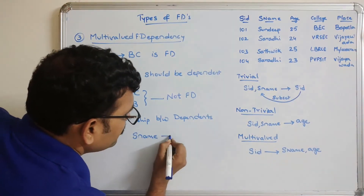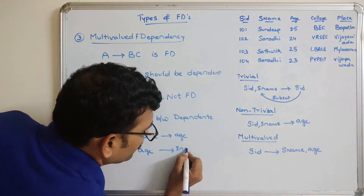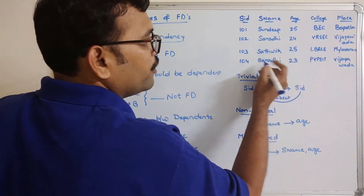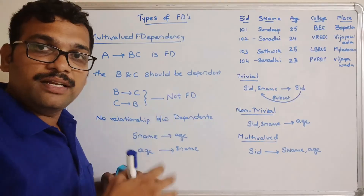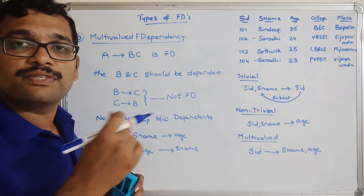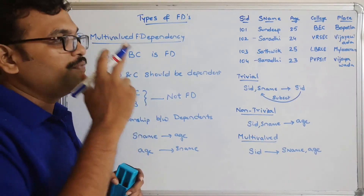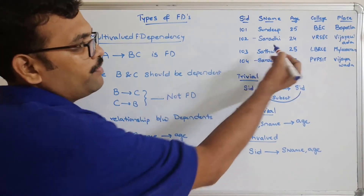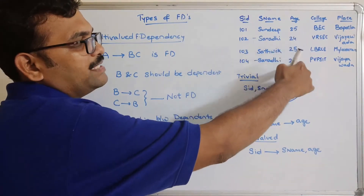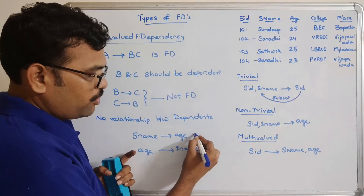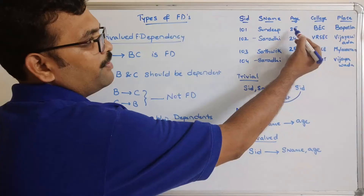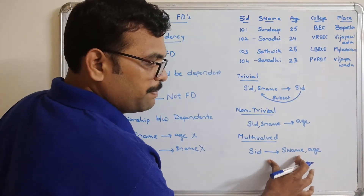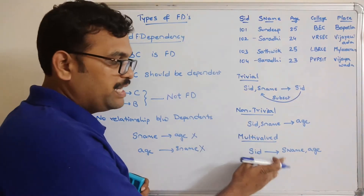Consider Sname tends to Age or Age tends to Sname — both should not be functionally dependent. Sandeep is 25 and Saradi appears with ages 24 and 23. The same Sname 'Saradi' gives different ages 24 and 23, so Sname does not determine Age. Checking reverse: Age 25 gives both Sandeep and Satrik — Age does not determine Sname either. Therefore this functional dependency is multi-valued functional dependency.